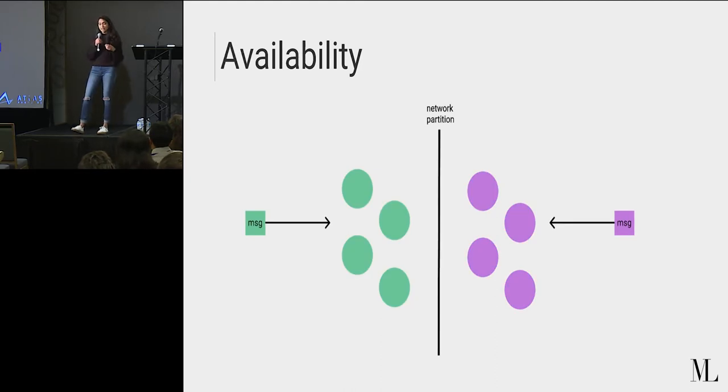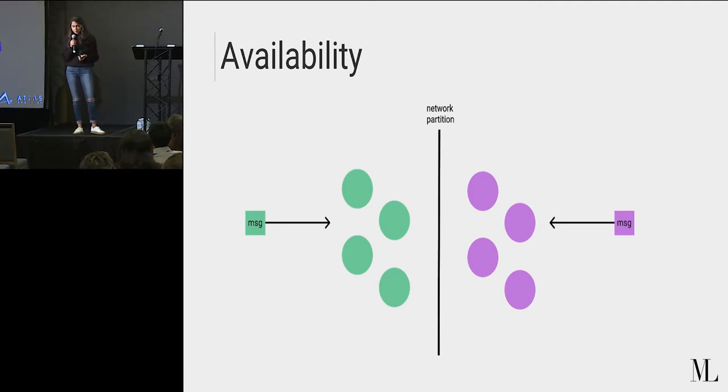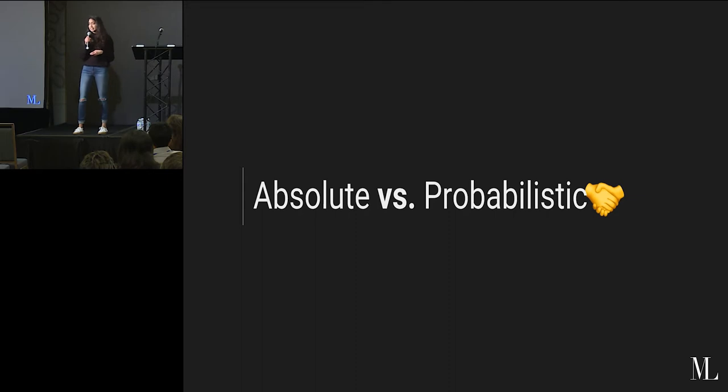But in an availability favoring system, we want to allow the system to continue, even in the case of a partition. So we're going to go ahead and let the green message in and let the purple message in, even though both halves might not agree with each other. So in this case, what we've been able to see is that there's a little more nuance. It's not always super clear exactly which one is better. These availability favoring systems give us probabilistic finality, and these consistency favoring systems give us absolute finality.